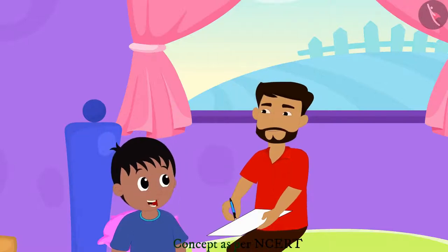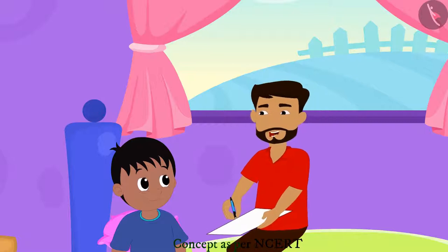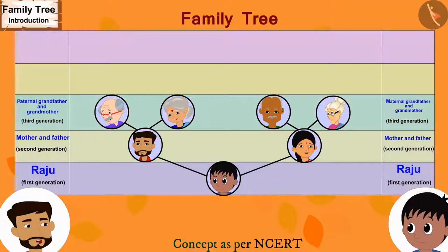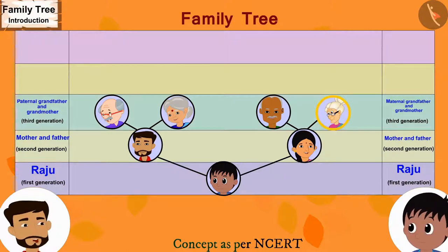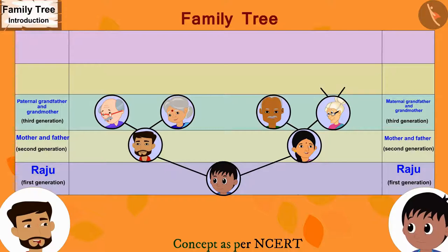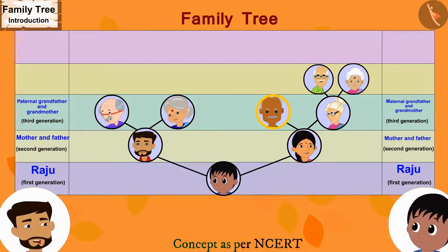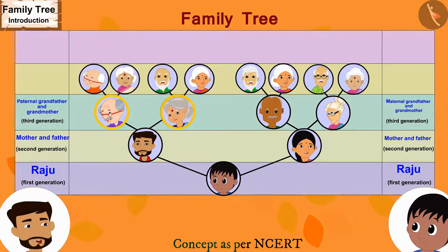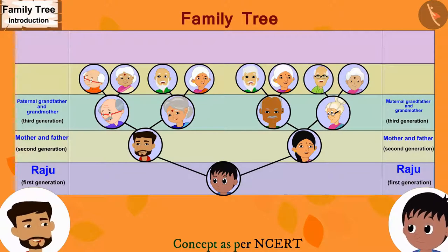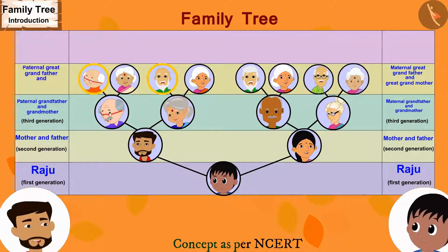Now, our family tree is complete, isn't it, father? No, Raju. We have yet to add more people to it. Look, for your maternal grandmother's parents, we will draw two lines and write their names. Then we will draw two lines for your maternal grandfather's parents and write their names. The names of your paternal grandfather and grandmother's parents will also be added in the same way. What is my relationship with all these people, father? These are your maternal great-grandfather and great-grandmother. And these are your paternal great-grandfather and great-grandmother. This is our fourth generation.